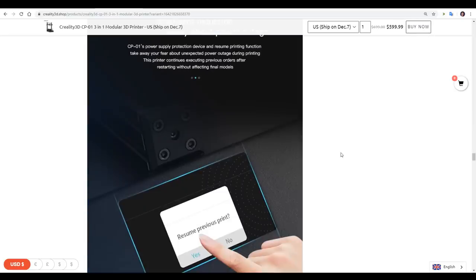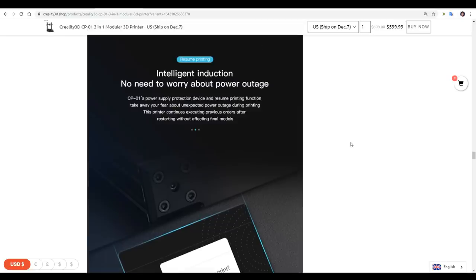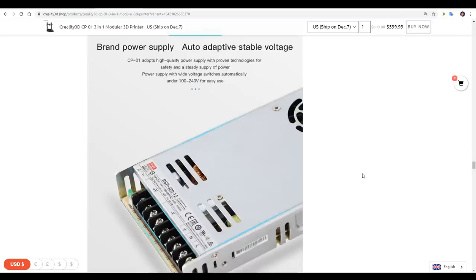This machine comes with a very similar touch screen to the CR-10S Pro and the CR-10 Max, and it's got some of the same features such as resuming printing after a power outage. That's it for this summary, let's concentrate on showcasing these features as it was delivered to me.